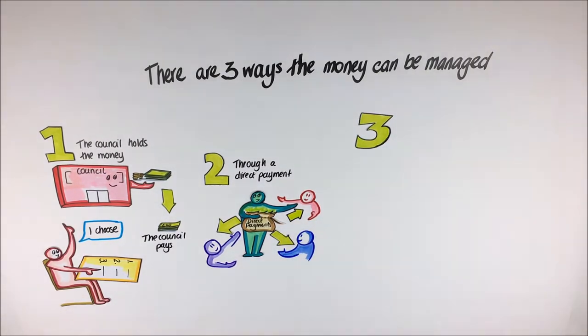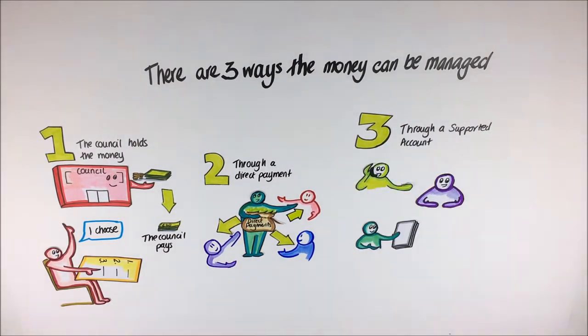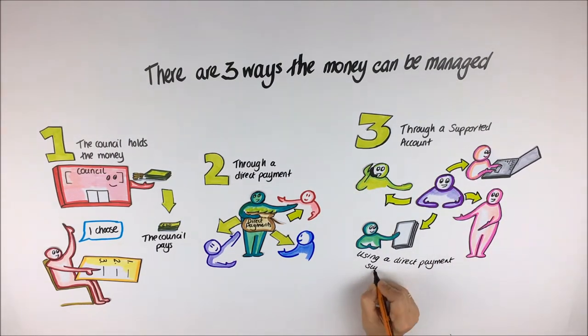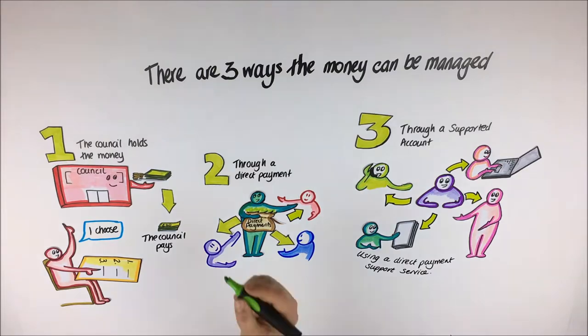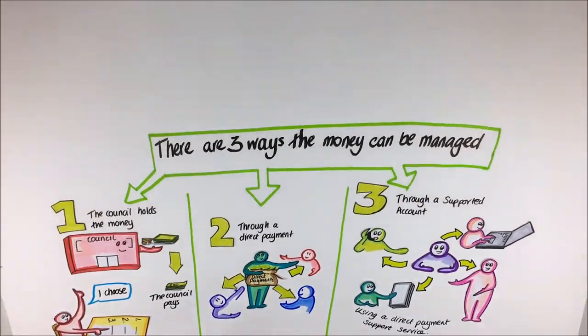Thirdly, through a supported account. You choose what you want to do and a direct payment support service will help you spend the money. This service will be paid for by Birmingham City Council.